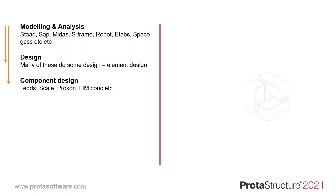That's not all we do — we do component design as well. By components you can think of any specialized part of the structure which needs to be designed and analyzed as a separate entity. One example would be steel connections. Here again we see a host of different software that has entered the market, like Prokon and Limcon — all these are for connection design and other components of your structure. So once again we are faced with a host of new software which we have to pay for.